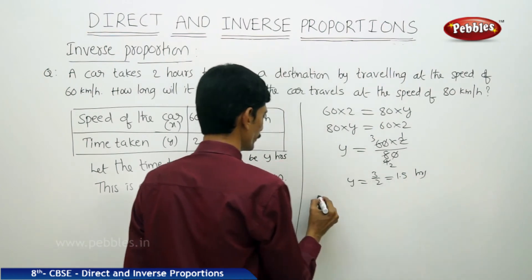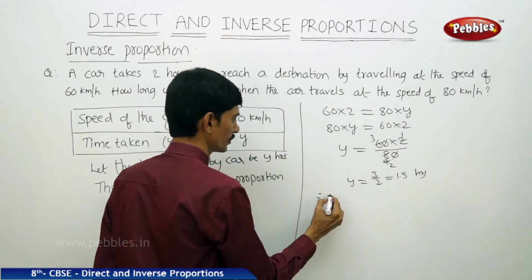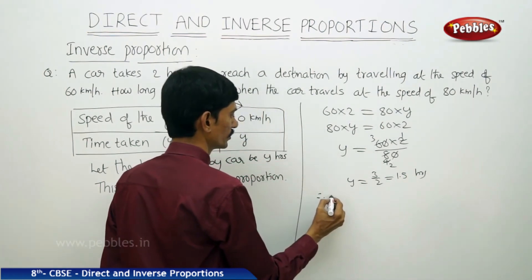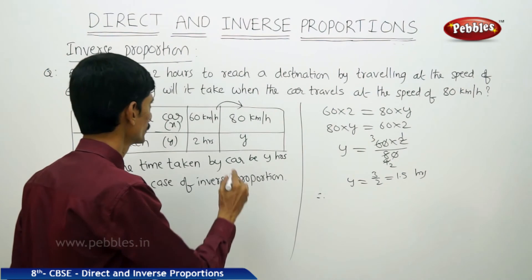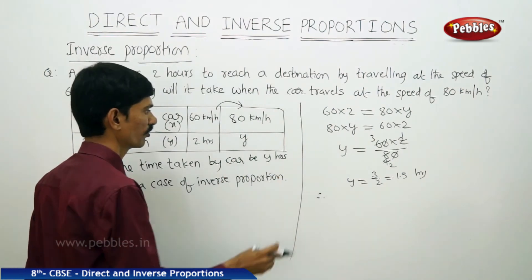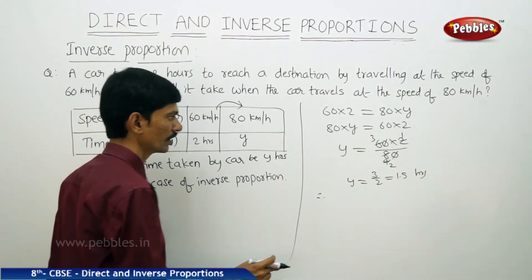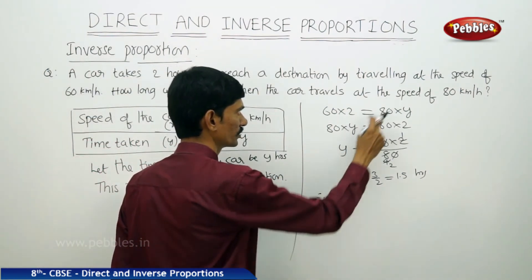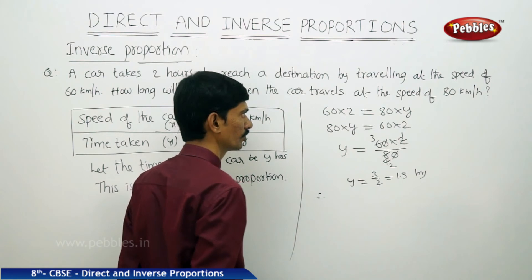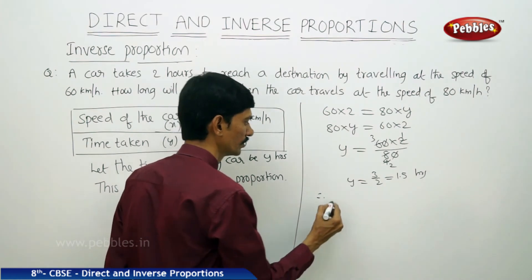Therefore, the car will take 1.5 hours to reach the destination at the speed of 80 kilometres per hour.